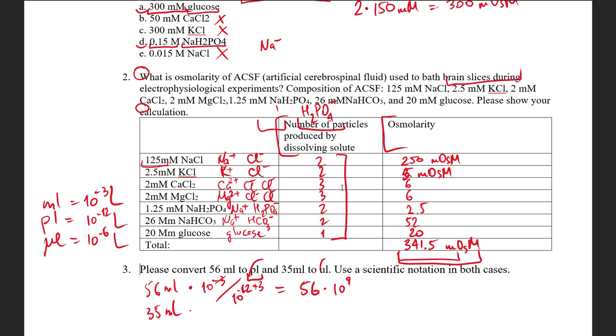For this one, we have 10 to the power of minus 3 divided by 10 to the power of minus 6. So here we will have 35 times 10 to the power of 3. Of course, we have picoliters here and microliters here. This is not the end.